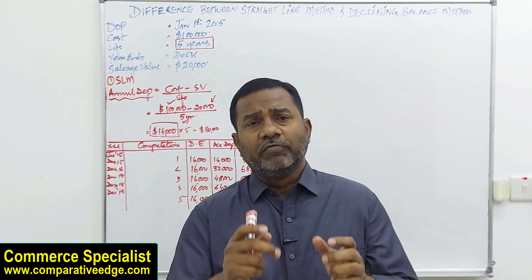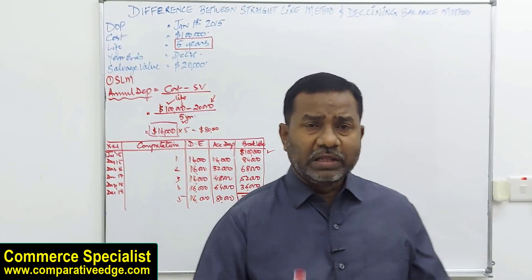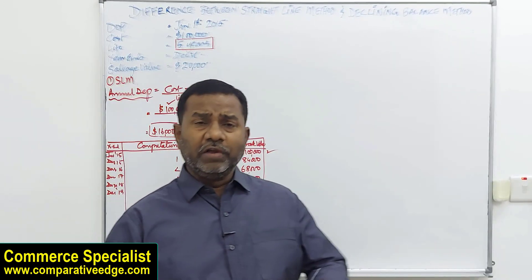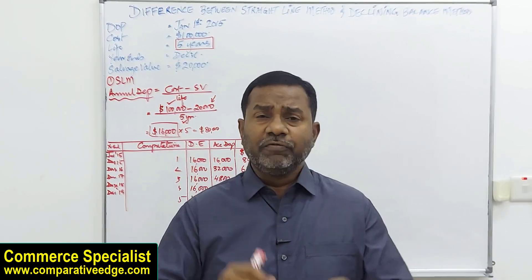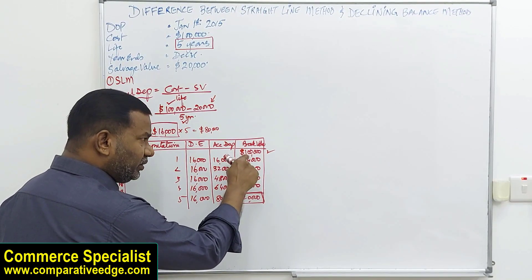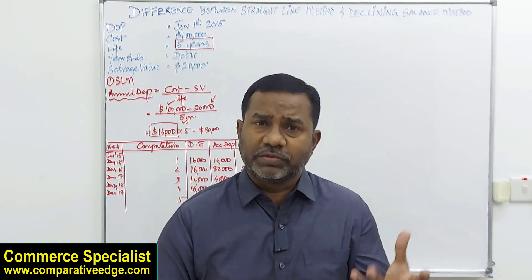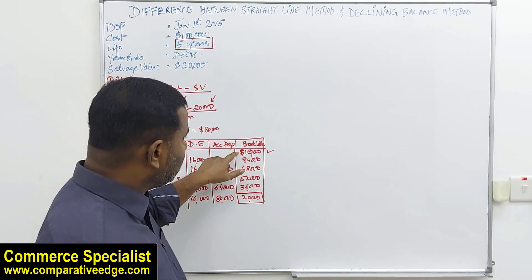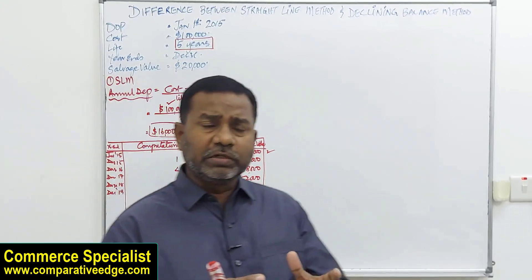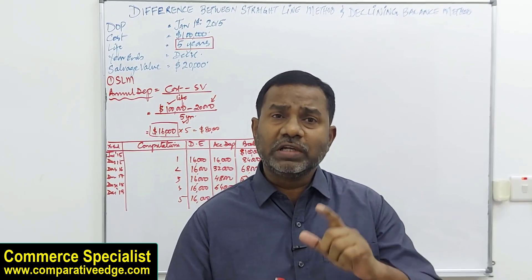Just in case a percentage is given in straight line method — say 20% — then depreciation will be 20% of the cost every year, regardless of salvage value. For example, 20% of 100,000 is 20,000 depreciation every year, with no scrap value in that case. Now, what we have to be very careful about is how to calculate depreciation using the declining balance method.